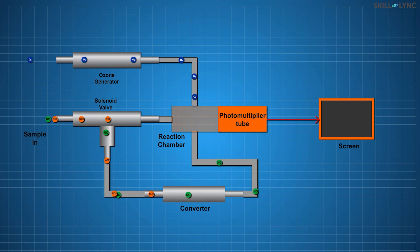Then, both the NO and ozone are sent to the reaction chamber. These molecules combine together to form photons. The photomultiplier tube detects the photons and converts them into electric signals. Thus, the reading gives the whole concentration of oxides of nitrogen.